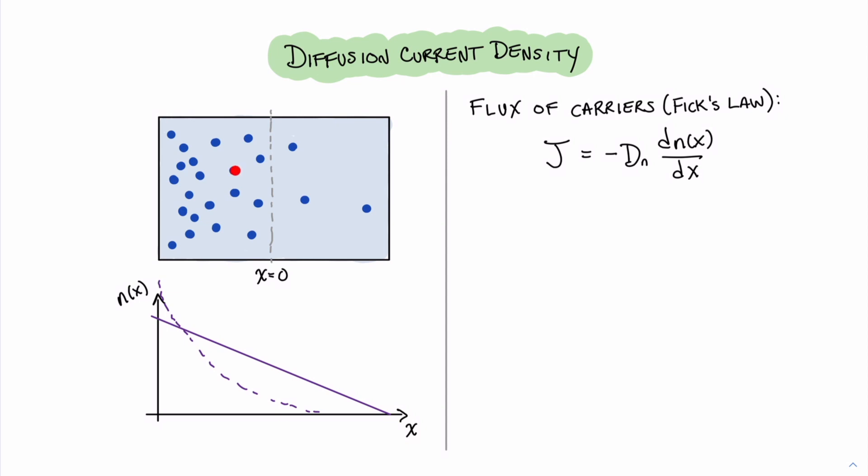The motion of these carriers is caused by thermal energy, and so therefore there's some random movement of these carriers around the system. They're going to slowly diffuse across. That flux of carriers is governed by a law called Fick's law, which is shown here as j equals minus the diffusion constant times the spatial change of carriers. But Fick's law is generic and not necessarily specific to semiconductors.